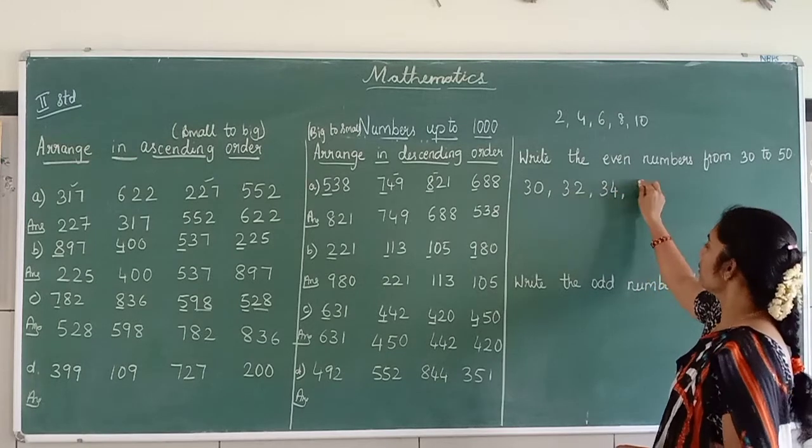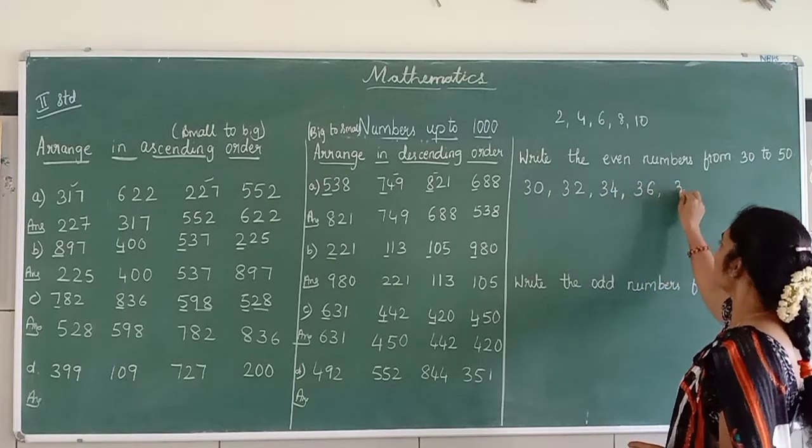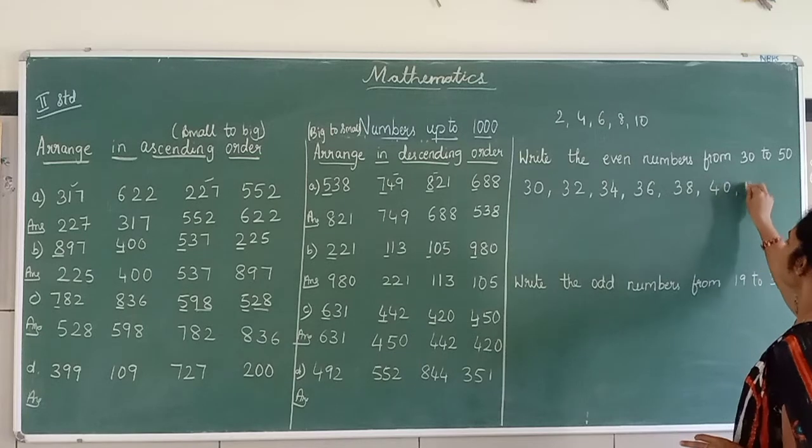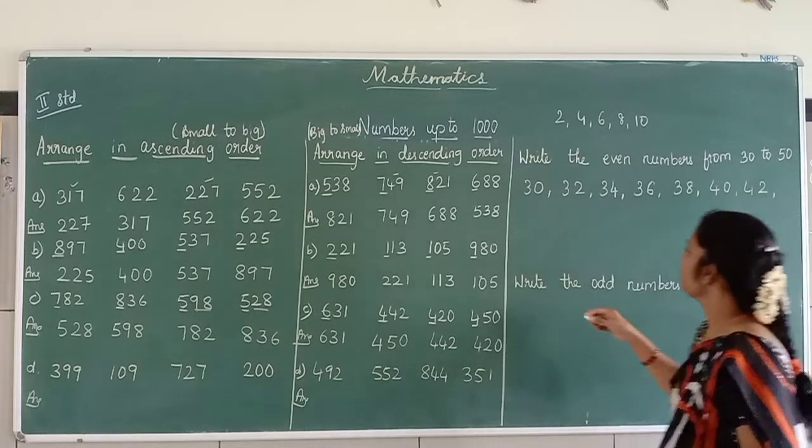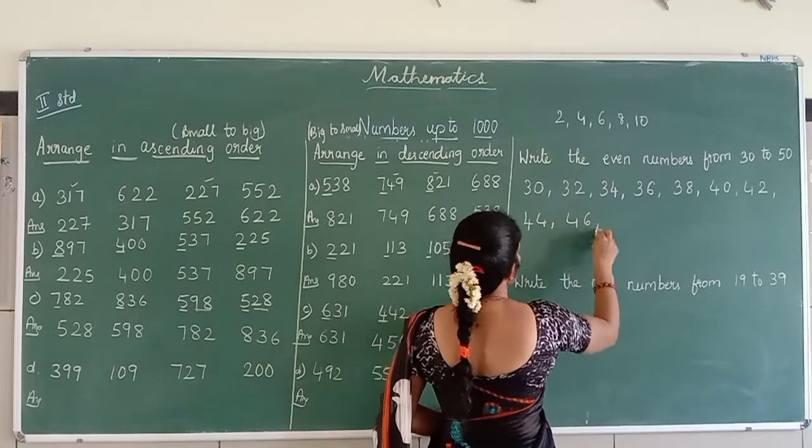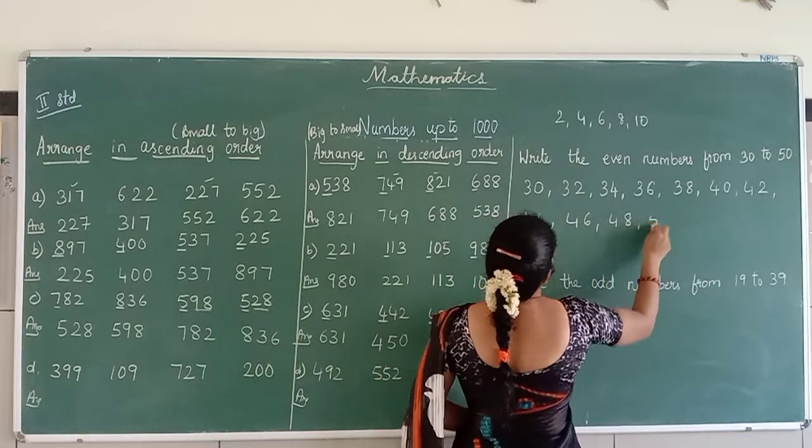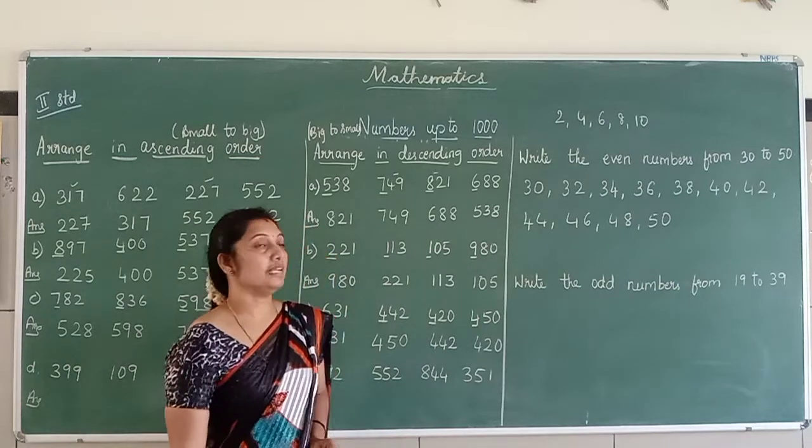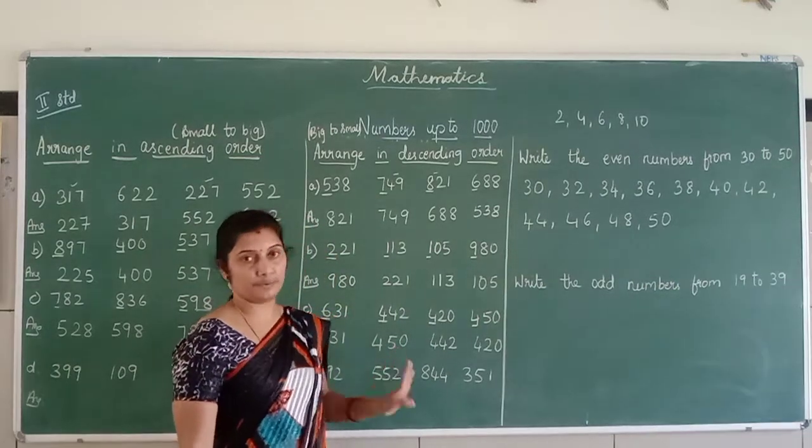After 32, it is 34, 36, 38, 40, 42, 44, 46, 48, and 50. This is the even number from 30 to 50. Okay?